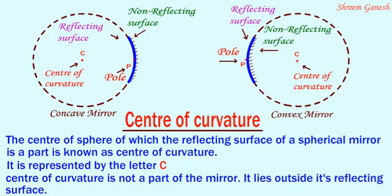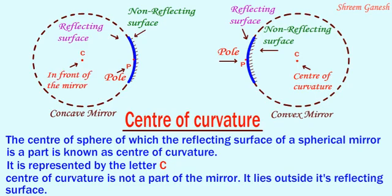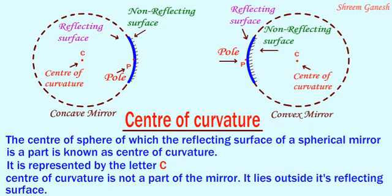In case of a concave mirror, the center of curvature lies in front of the mirror. But in case of a convex mirror, it lies behind the mirror.